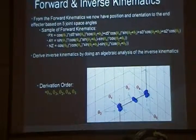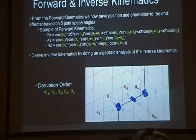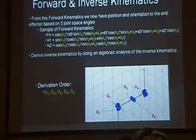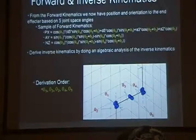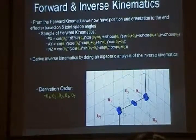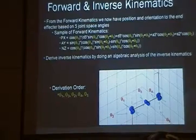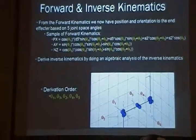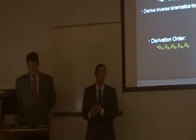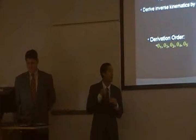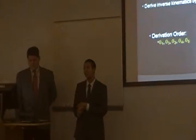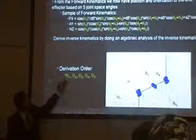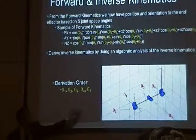Now, to derive the inverse kinematics, we needed to do a type of analysis to figure out the x and y components in the form of thetas. So, we did an analytical analysis versus another option which is a geometric analysis. And to derive these thetas, there's a type of constraint that we have to follow. It's dependencies and derivation order. Therefore, we solve for theta one, then theta three, then theta two, then theta four, then theta five.